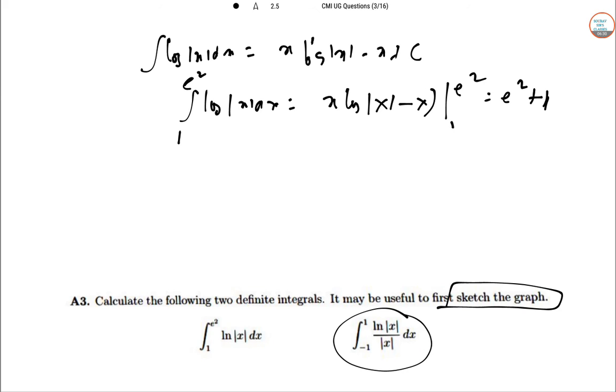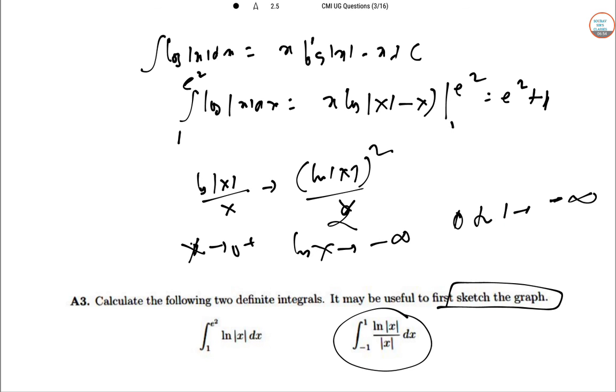So the anti-derivative of log of mod x by x is this square of a by 2. So as x tends to positive so log of x tends to minus infinity. So the integral from 0 to 1 is minus infinity and it is the same for the negative side because of the integrand is even. So integrand is even.